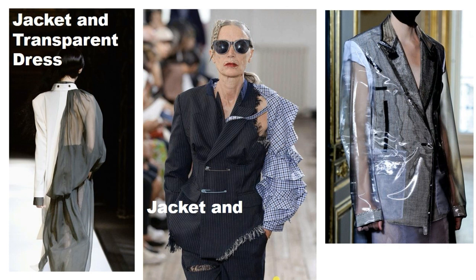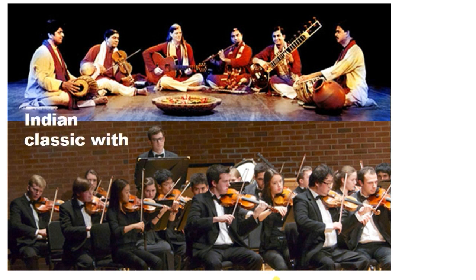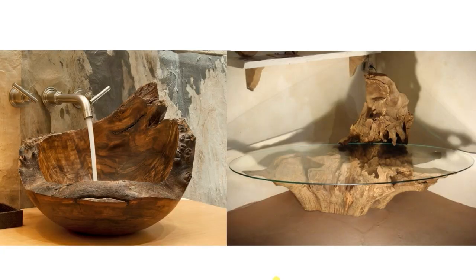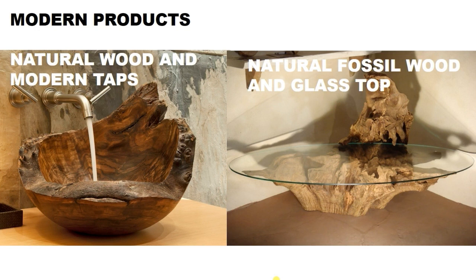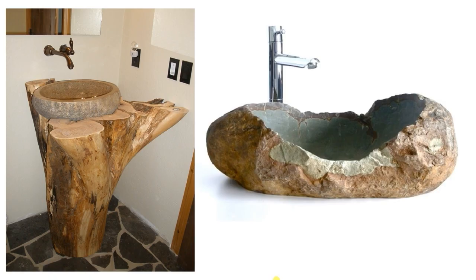Then there is a jacket with a tassel checkered sleeve, and a jacket with a PVC top. In music, Indian classical has been put together with Western symphony. Modern products show fossilized wood combined with modern tablets to create a new kind of product. You can also see fossil woods with a glass top — the same concept — creating a new product, new moods, and a new narrative.